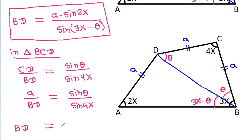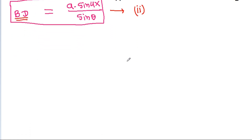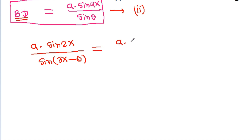And BD will also be equal to A times sin 4x divided by sin theta. Suppose this is equation 1 and this is equation 2. Then, setting BD equal to BD: A times sin 2x divided by sin(3x minus theta) equals A times sin 4x divided by sin theta. A cancels out.